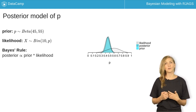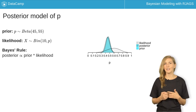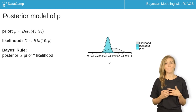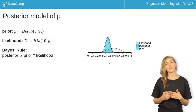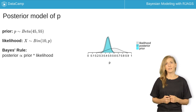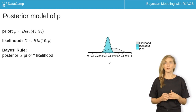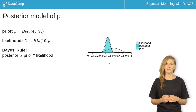However, in more sophisticated model settings, tidy closed-form solutions to this formula might not exist. Thus, in this course, we'll focus on approximating posterior models using RJAGS.